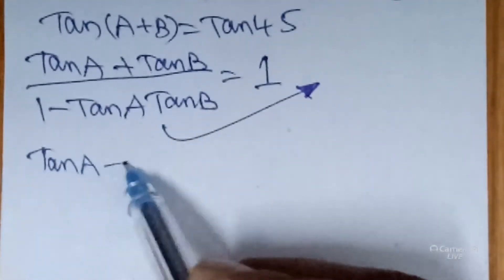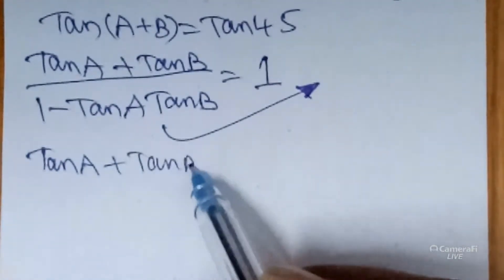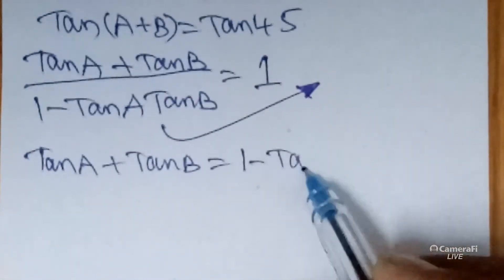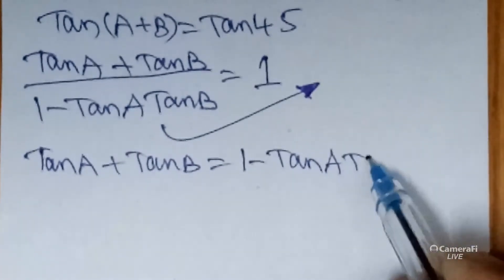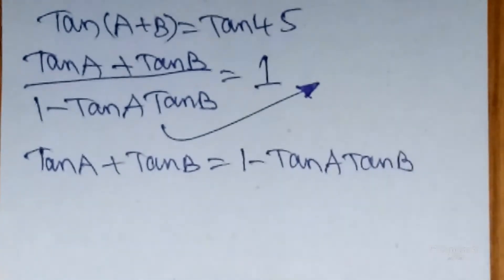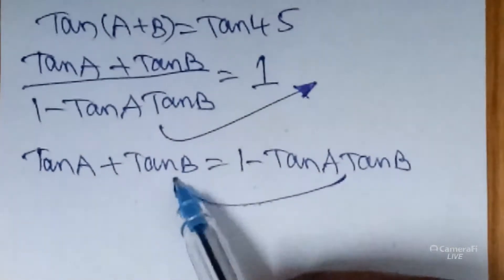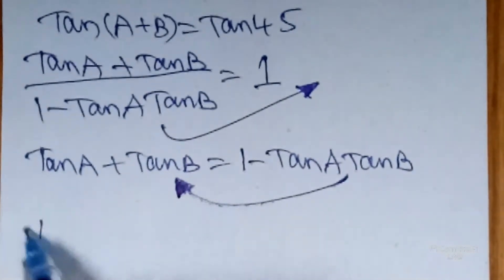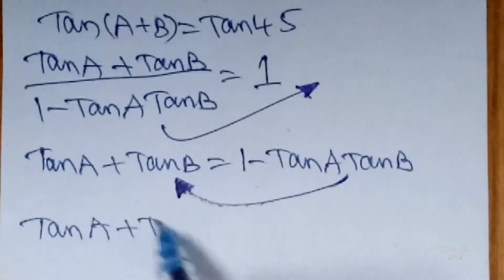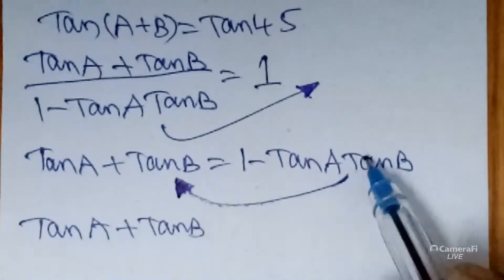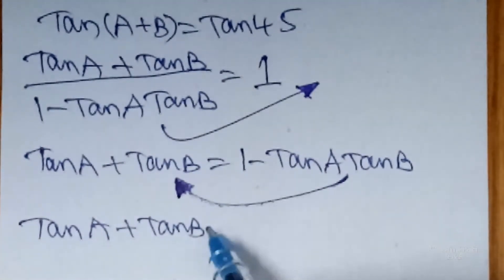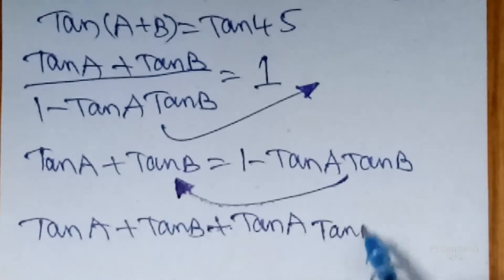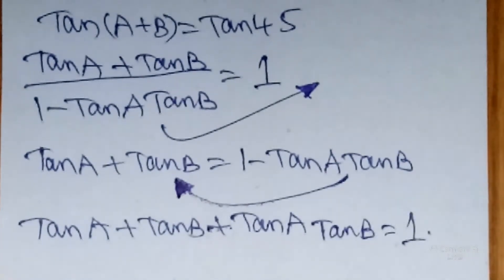Cross-multiplying, tan a plus tan b equals 1 minus tan a times tan b. Bringing tan a times tan b to the left side, we get tan a plus tan b plus tan a times tan b equals 1. The terms rearrange so that the negative value comes to the other side as a positive value.